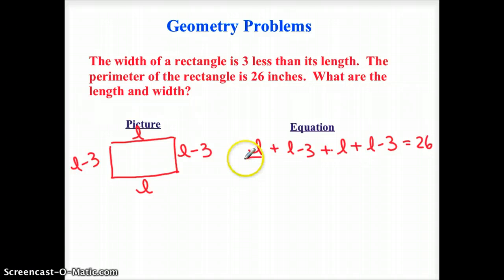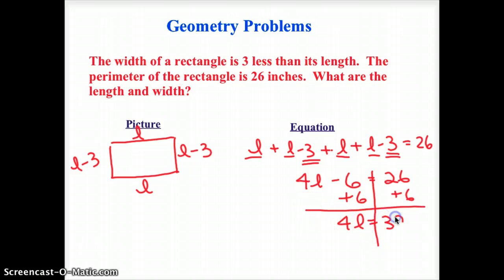I'm going to combine my like terms again. I've got four L's here, minus three, and minus three, so that's minus six, equals 26. Solve it like a normal equation. I'm going to add six to both sides. I'm going to get four L equals 32, and I'm going to divide both sides by four, and I have L equals eight.